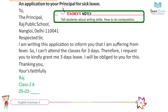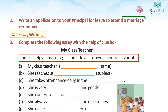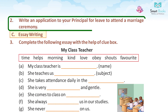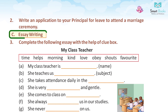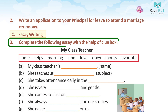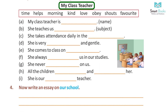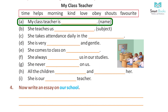Teacher's Note: Tell students about writing skills and how to do composition. Exercise two: Write an application to your principal for leave to attend a marriage ceremony. C. Essay Writing. Exercise three: Complete the following essay with the help of the blue box — My Class Teacher.